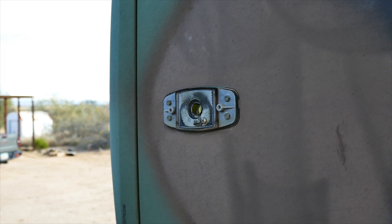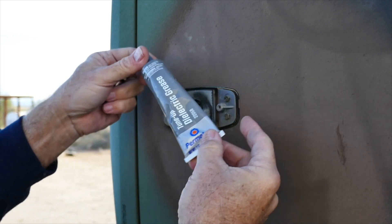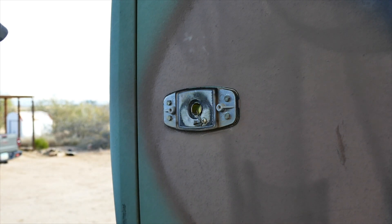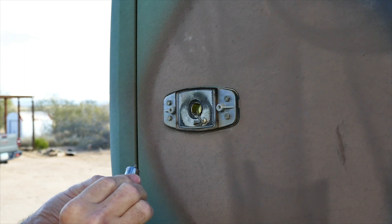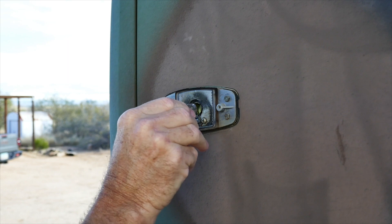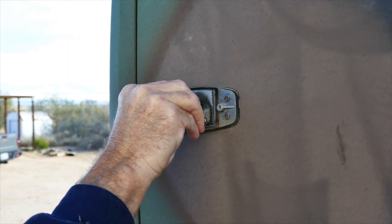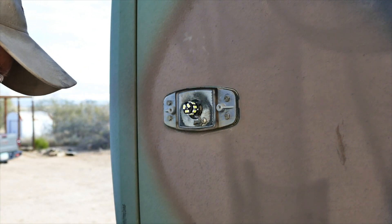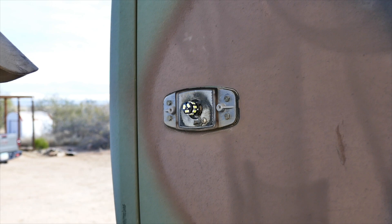You know how sometimes these bulbs get corroded in their sockets? What I'm going to do is just put a nugget of this on there. Basically it just keeps things from getting corroded in place. Then we are going to insert this. It just pushes in and does a little twist.